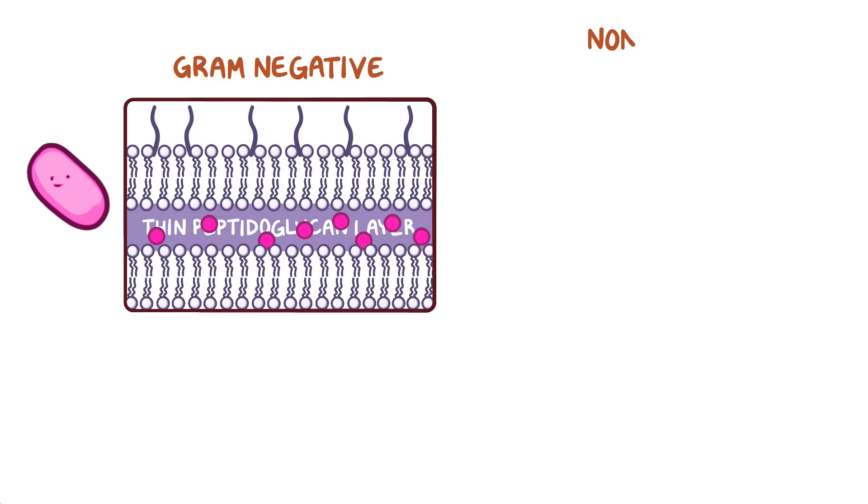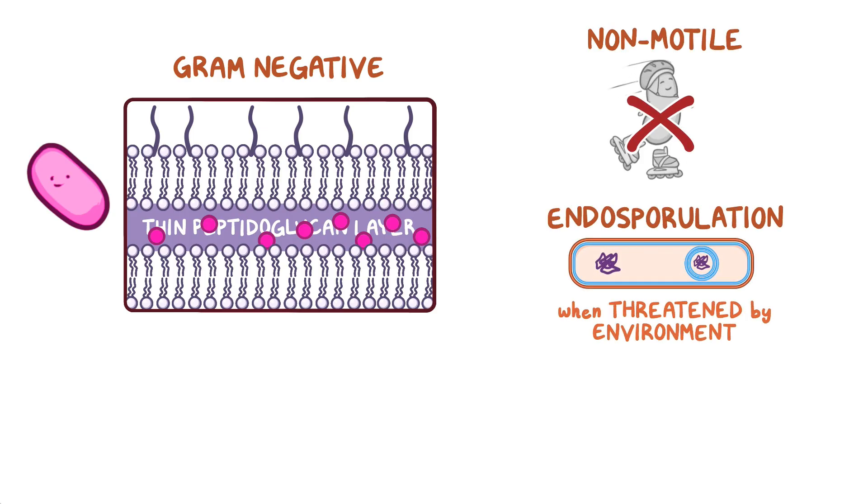C. burnetii is also non-motile, and it can undergo endosporulation when threatened by the environment, like when the temperature becomes too high or too low, in case of extreme dryness, or when there's harmful radiation around.